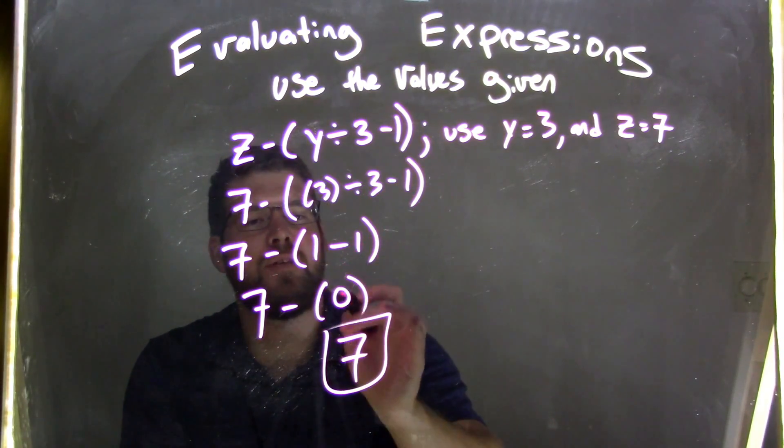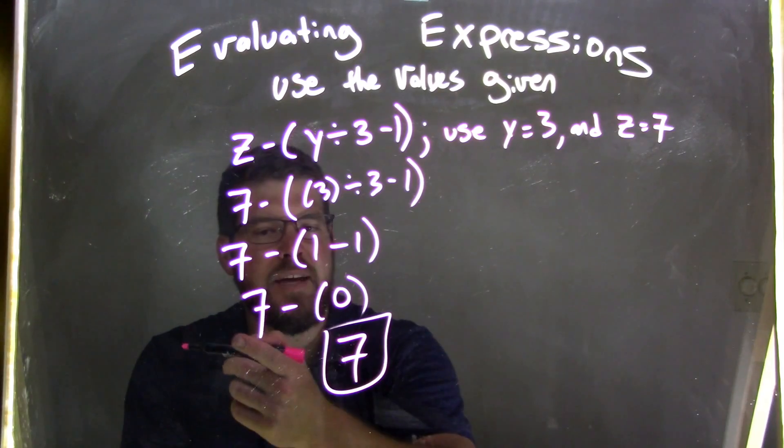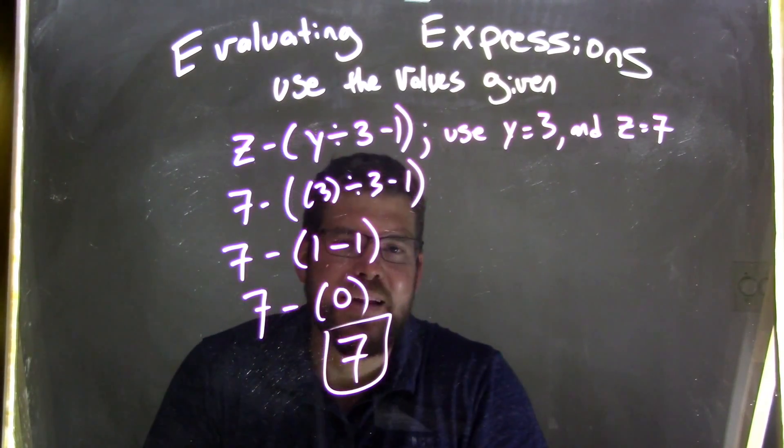And we subtract, we're still inside the parentheses to get 0. 1 minus 1 is 0. 7 minus 0, bring that 7 down on the outside. 7 minus 0 is 7.